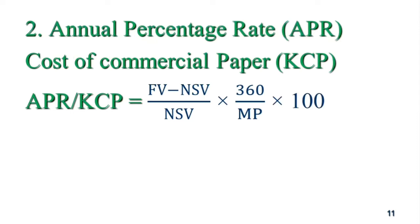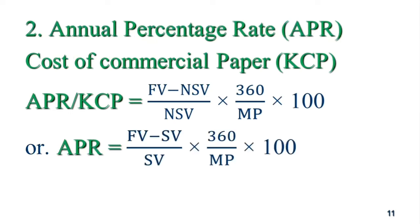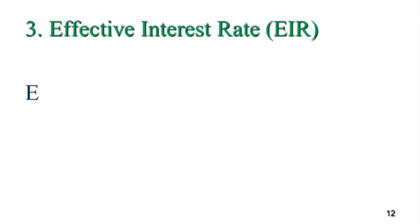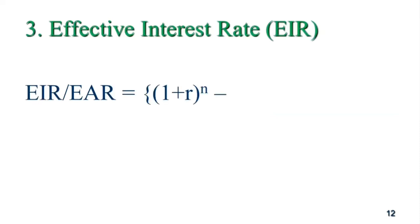Annual percentage rate: cost of commercial paper equals face value minus net value, divided by net value, multiplied by 360 divided by maturity period, into 100. Also we can write: face value minus net value divided by net value, times 360 divided by maturity period, times 100.